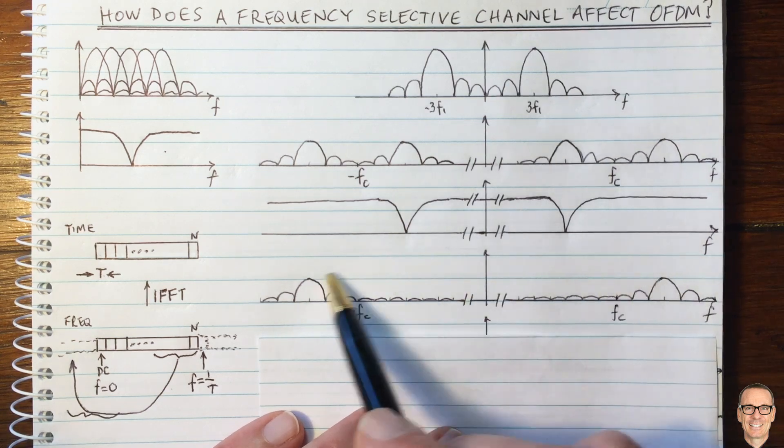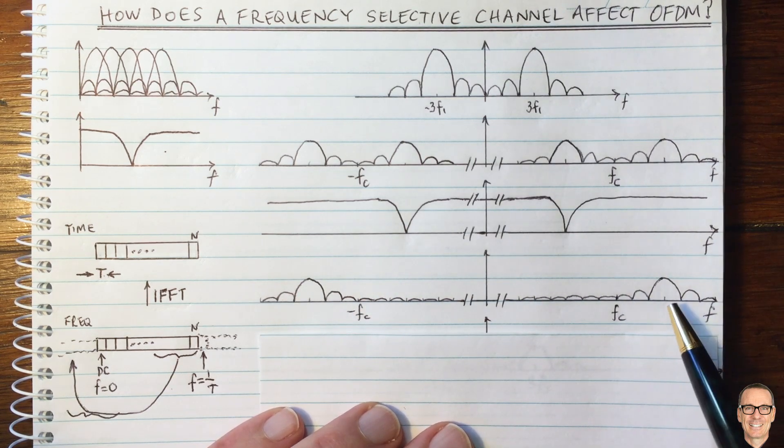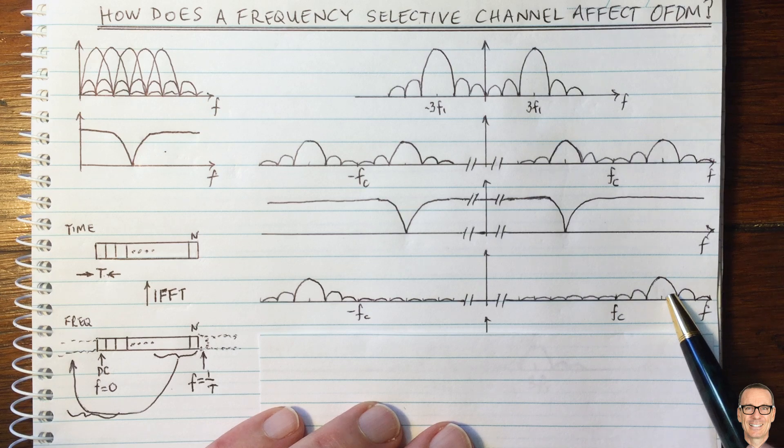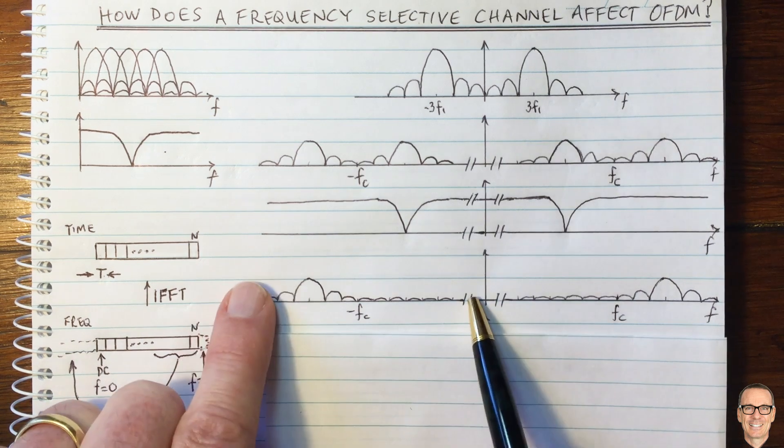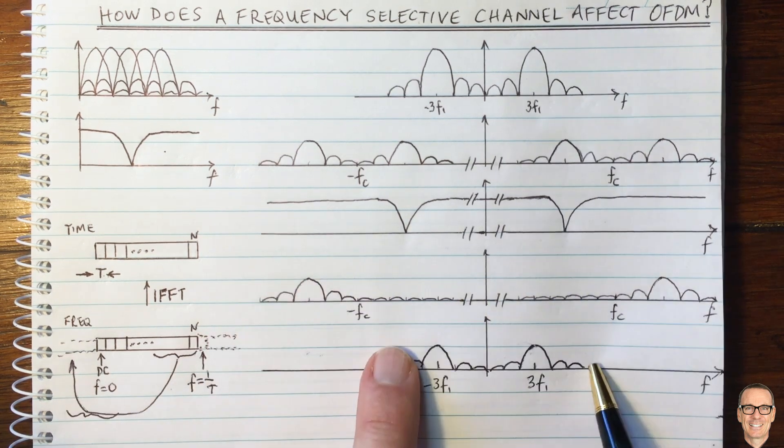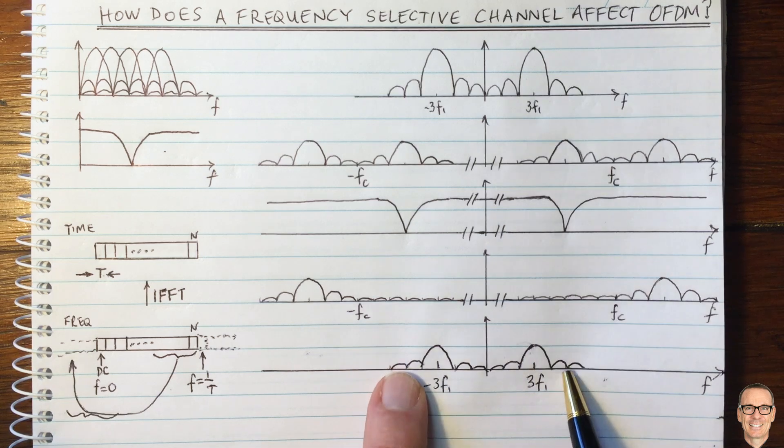this will be the spectrum at the receiver end. And then when you down convert by again multiplying by a cos, this component here will be centered at zero. This component will be centered at zero.